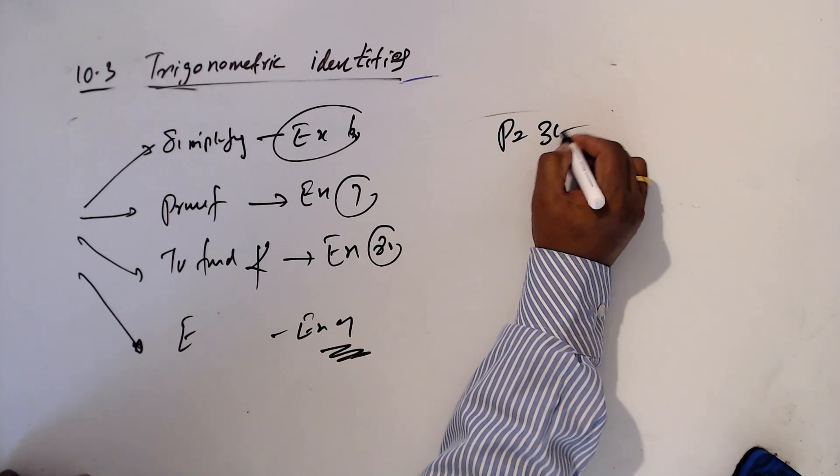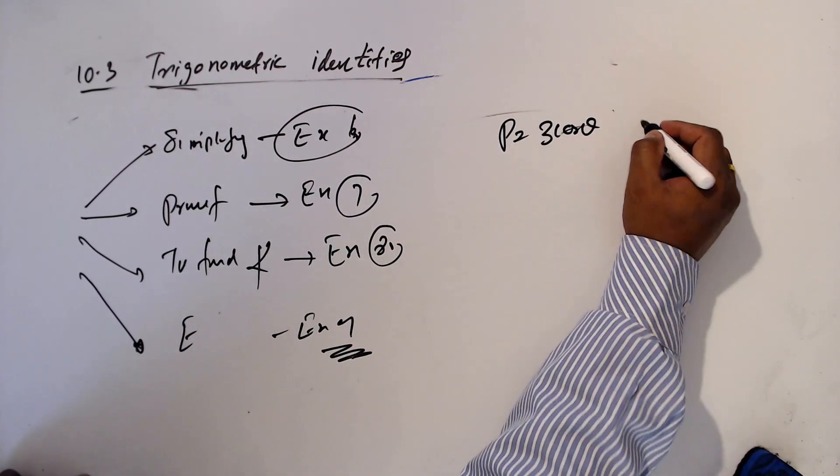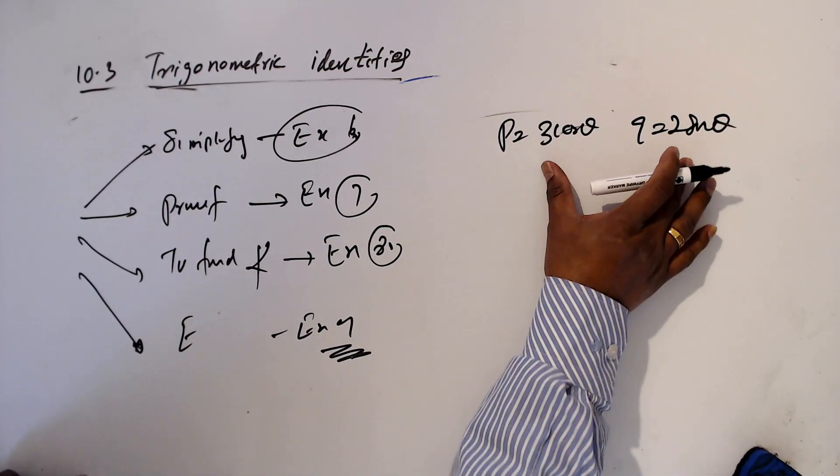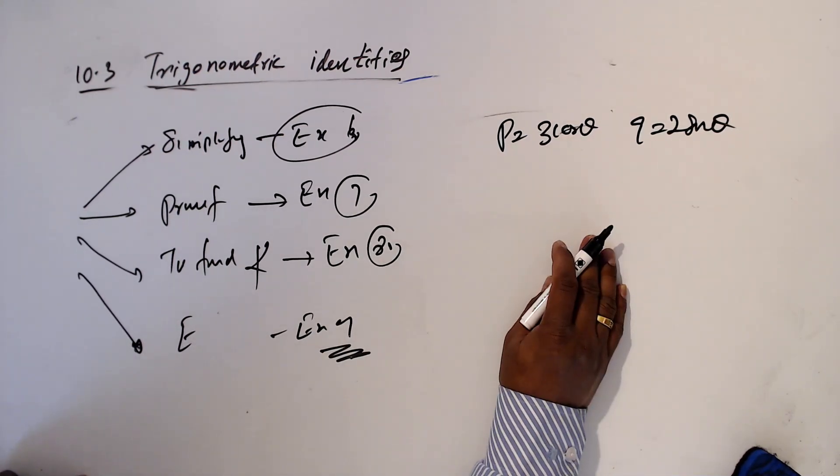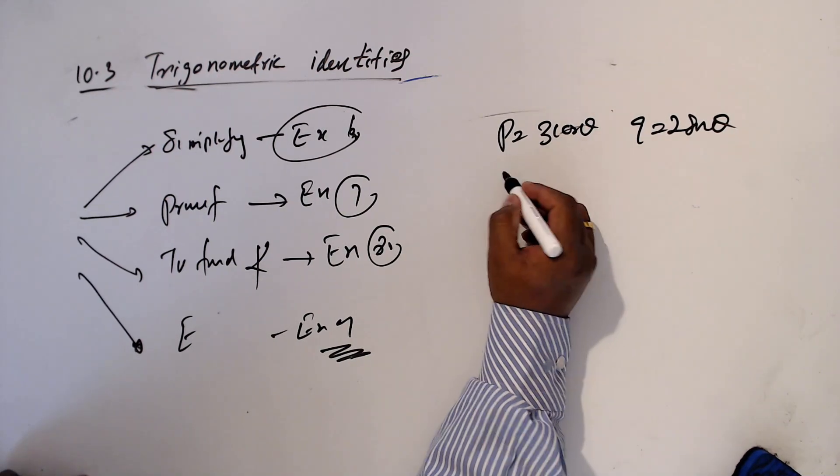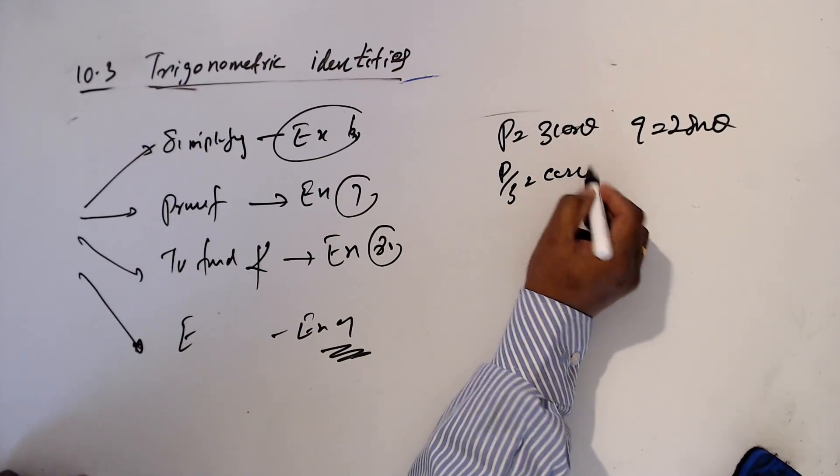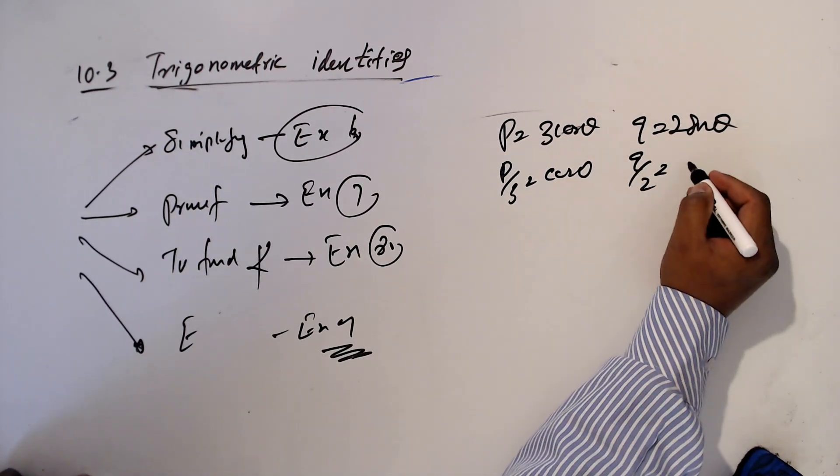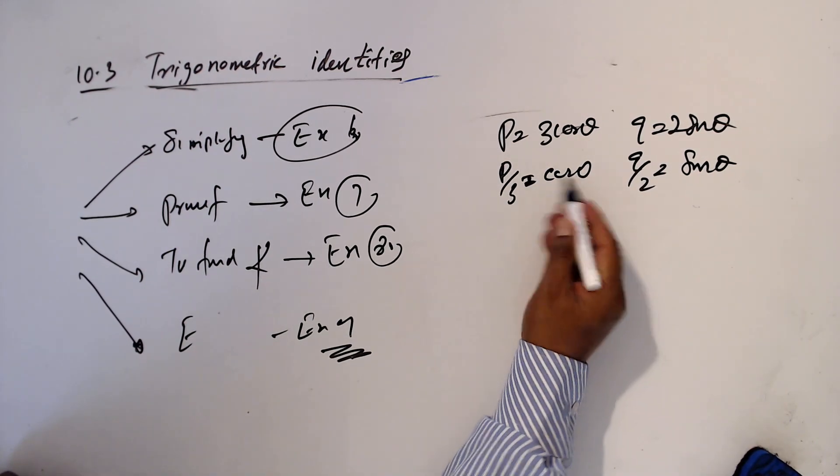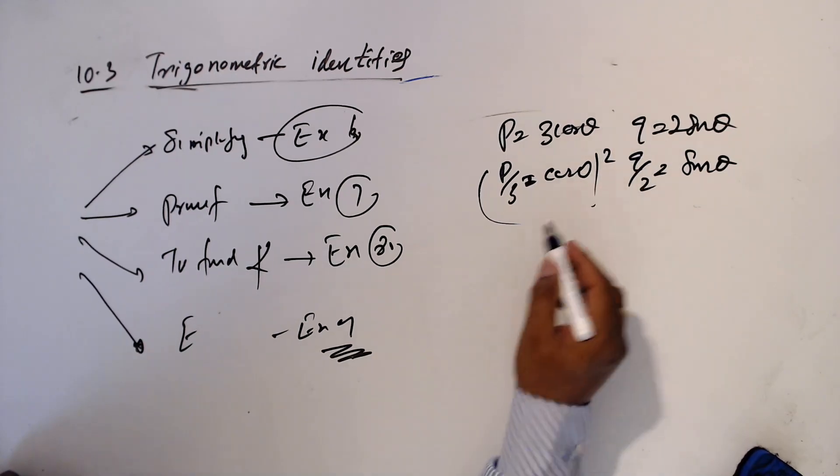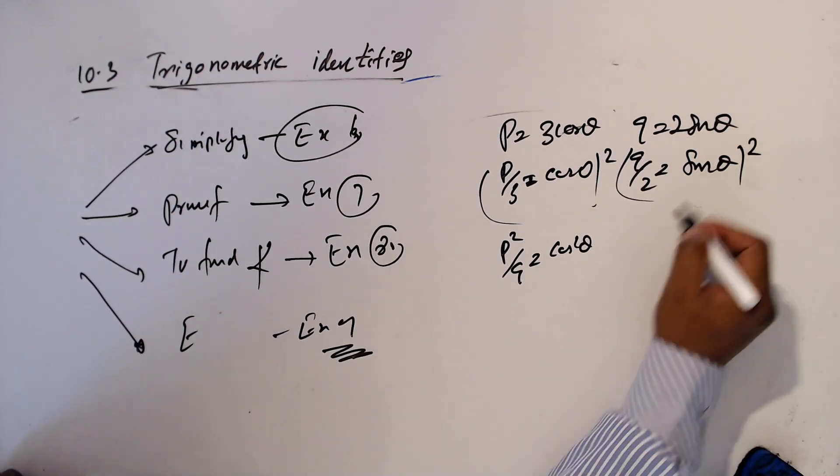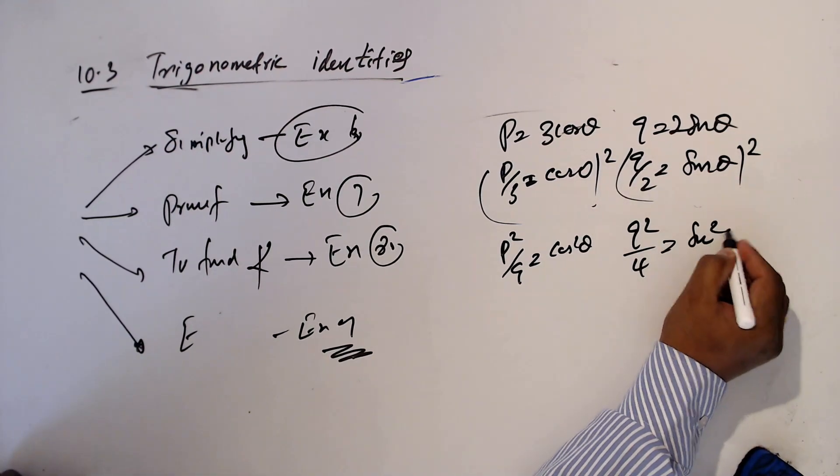P equal 3 cos theta. Now I want to find a relationship between P and Q. Then we can write P divided by 3 equals cos theta. I will square this one. P square over 9 equals cos square theta. I will square this one. Q square over 4 equals sin square theta.